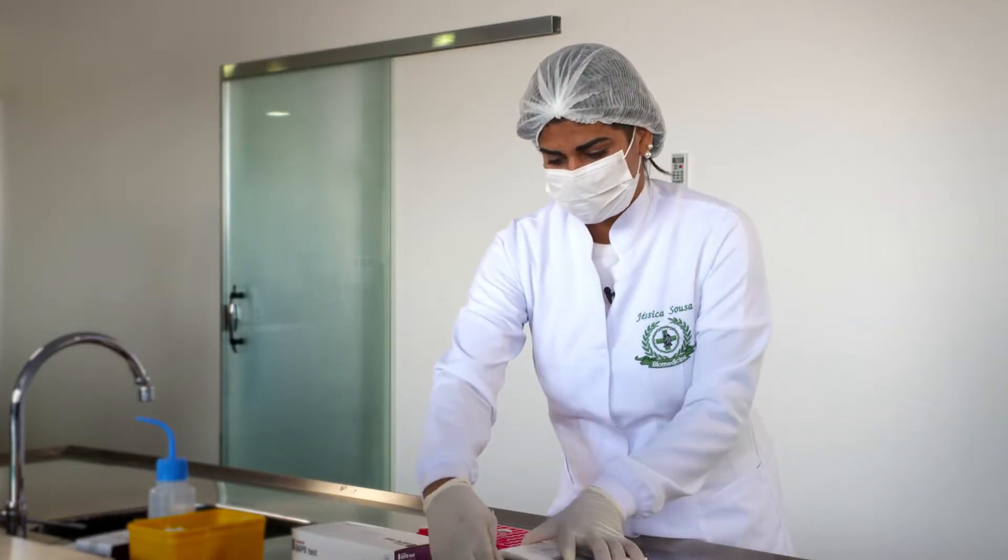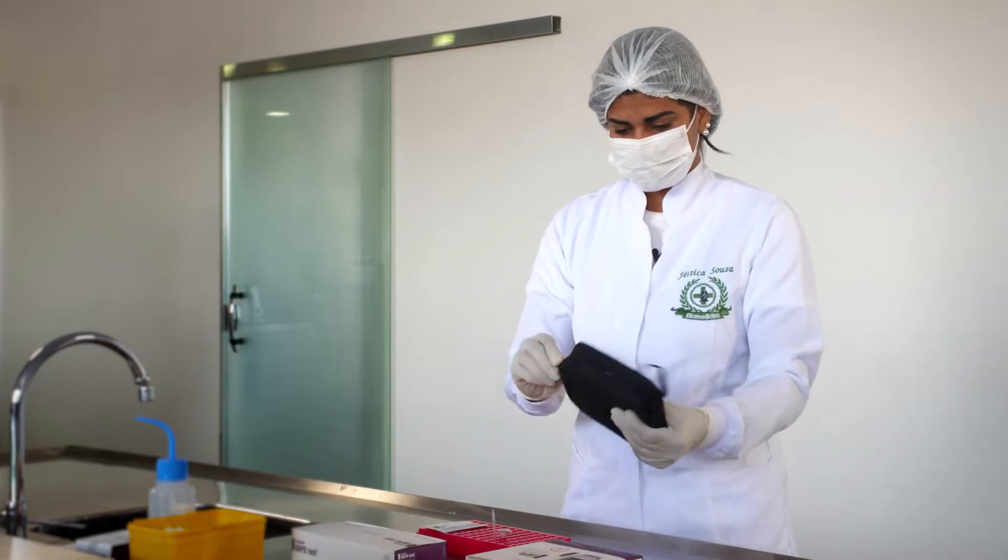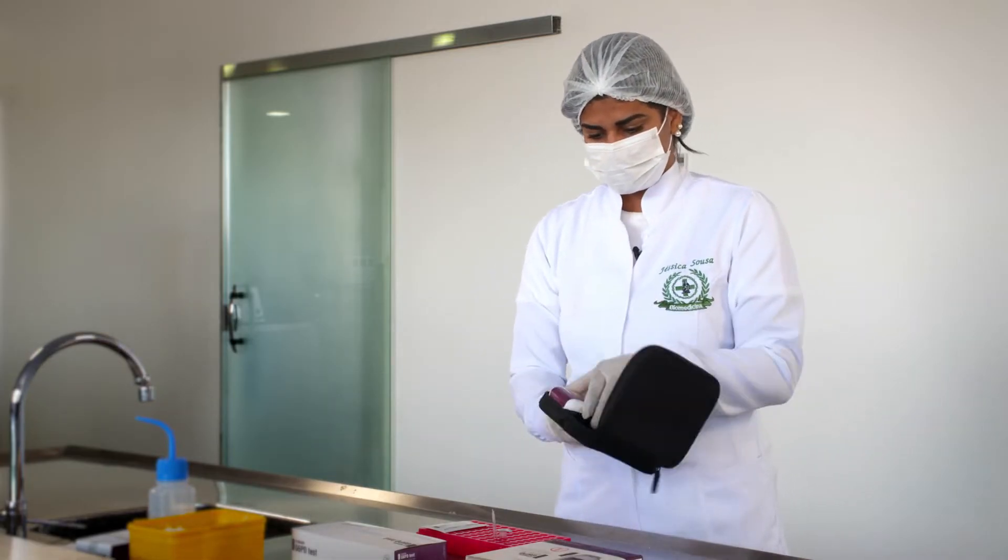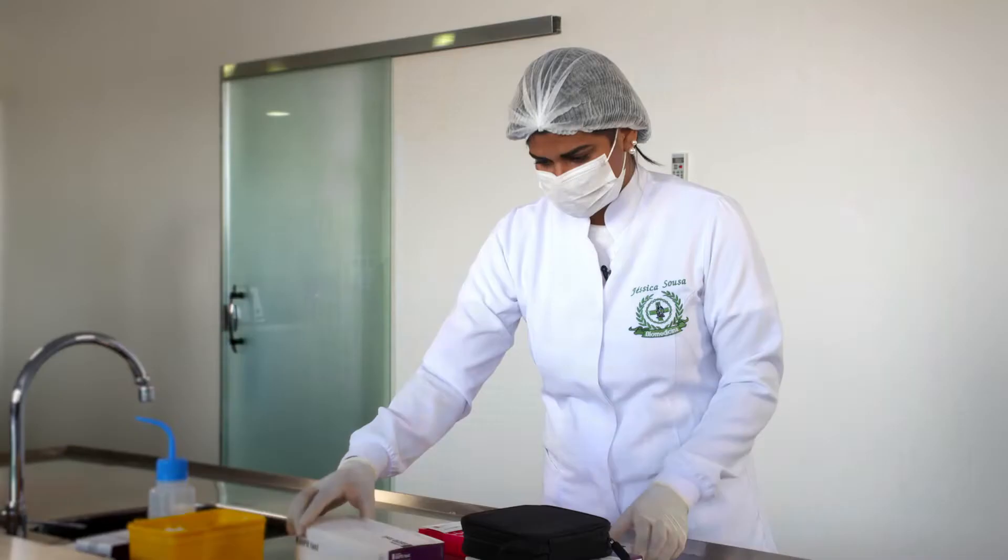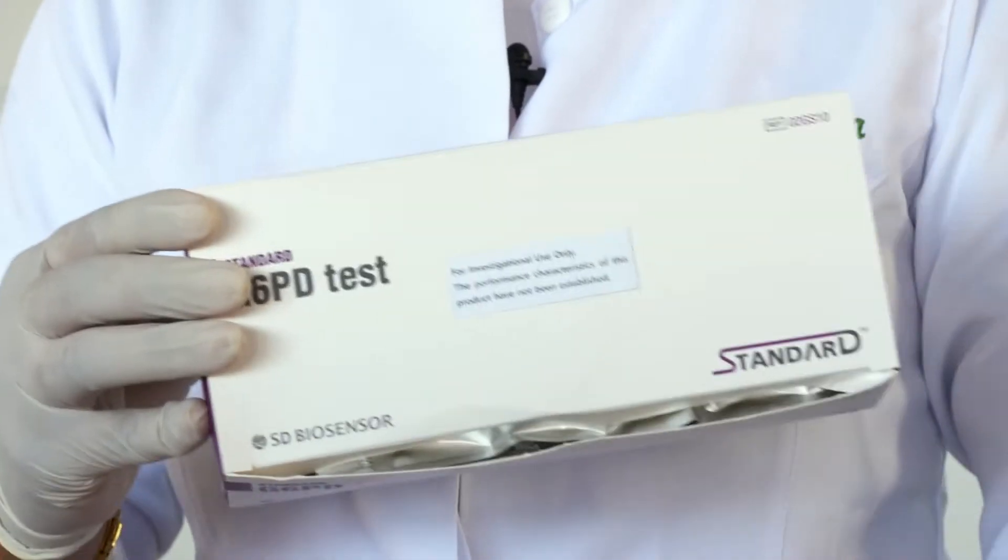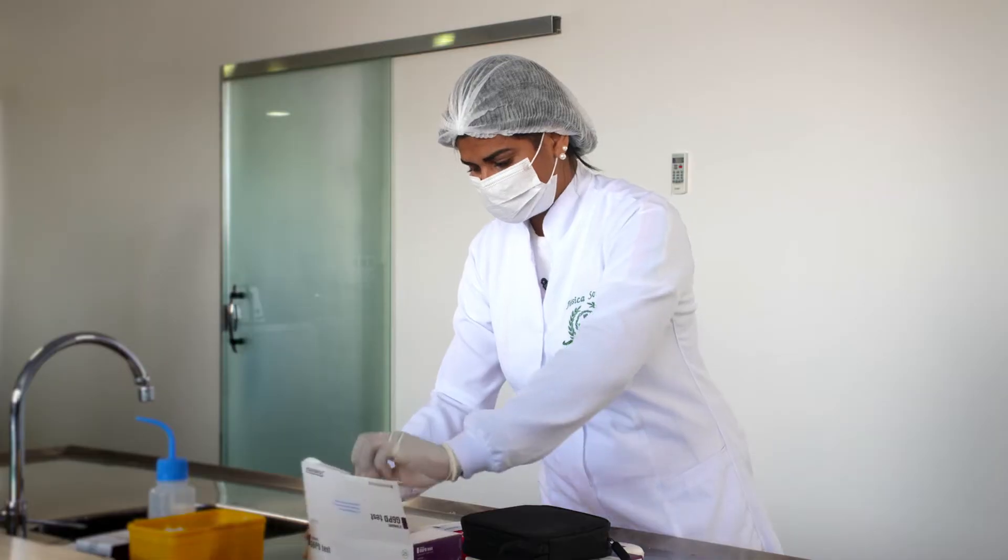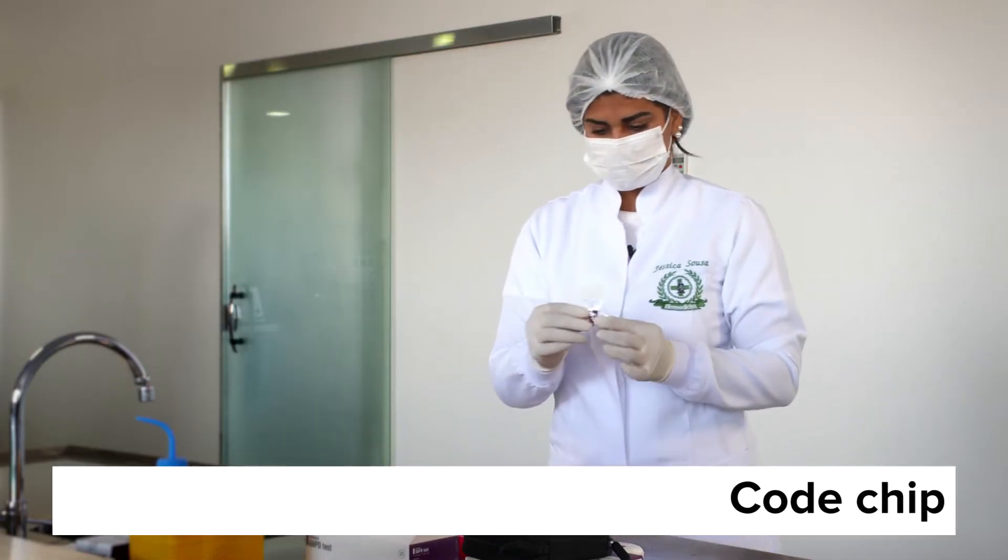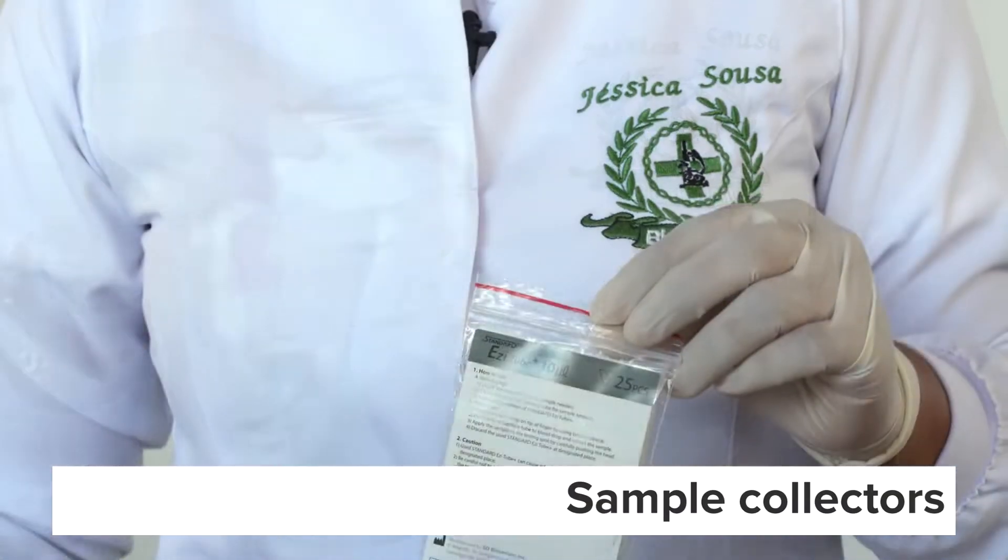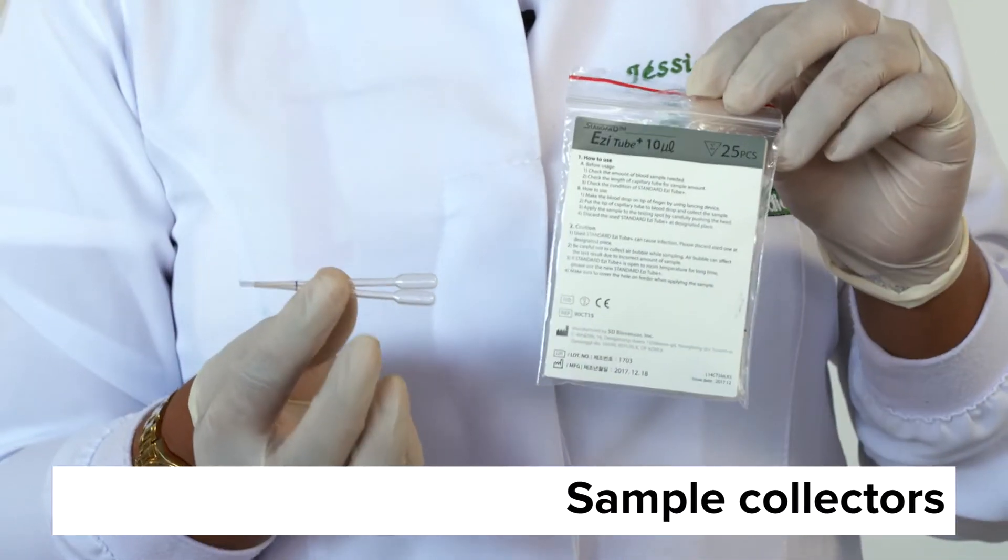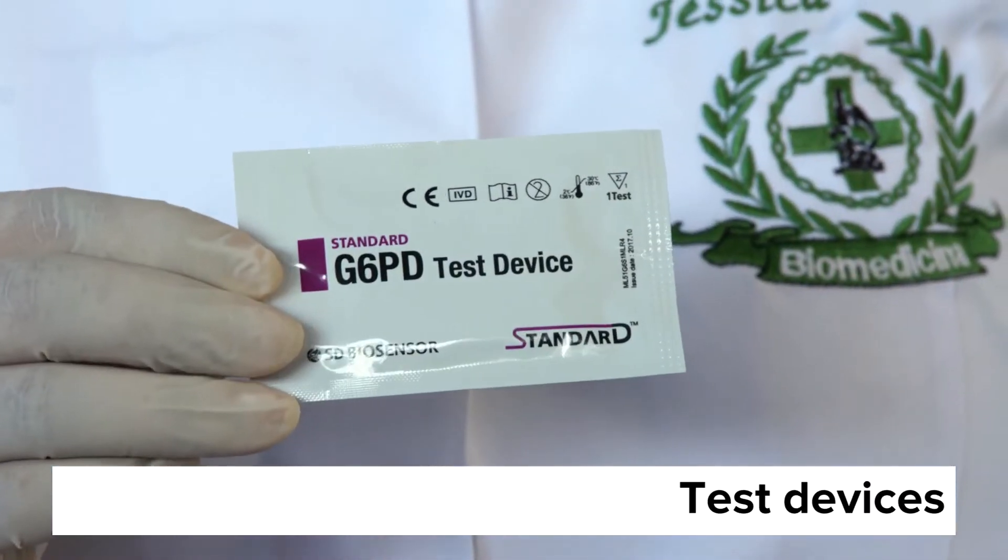The quantitative G6PD test comes with the following equipment: the analyzer and, in a separate box, a code chip, a pack containing the extraction buffers, and a pack containing the sample collectors and the test devices.